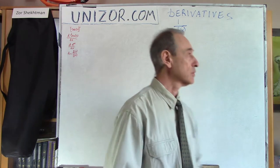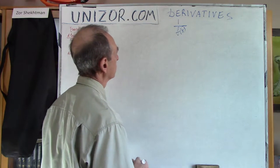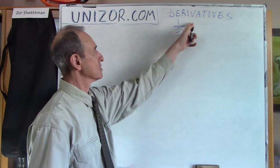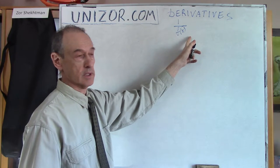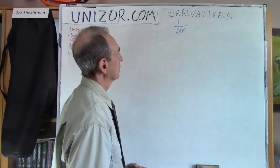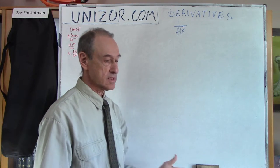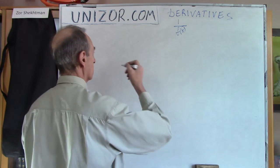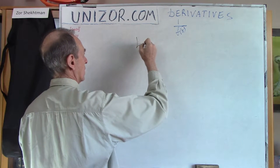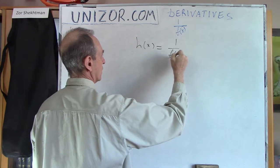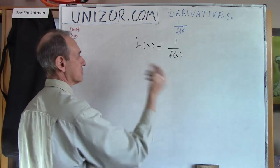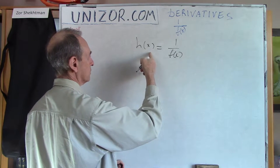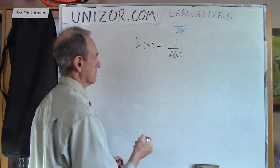Today we will talk about the property of how to take the derivative of a function which is expressed as one over another function. Let's do exactly the same as the prescription for taking a derivative asks for. So if this is a function equal to 1/f(x), then the derivative is the limit of the ratio of the increment of the function divided by the increment of the argument.